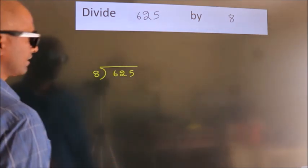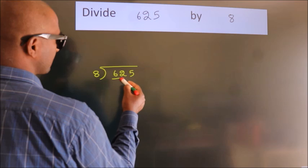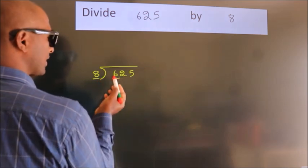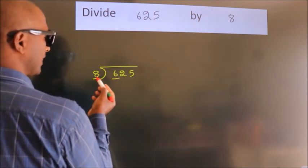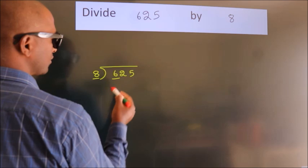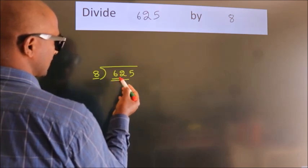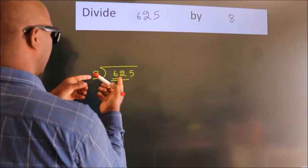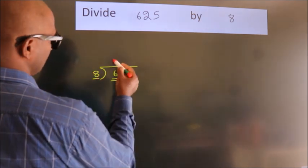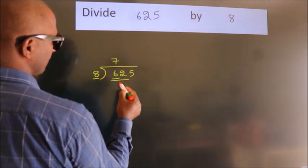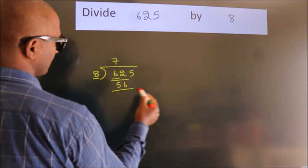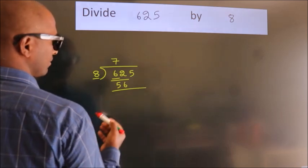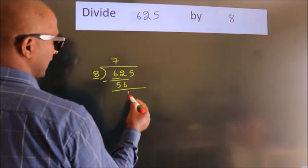Next, here we have 6, here 8. 6 smaller than 8. So we should take two numbers, 62. A number close to 62 in 8 table is 8 7s 56. Now, we should subtract. We get 6.